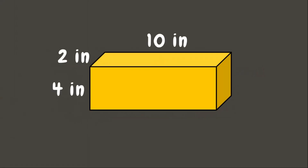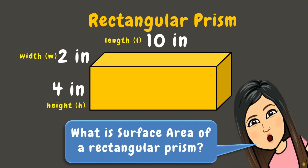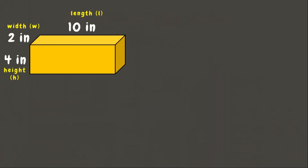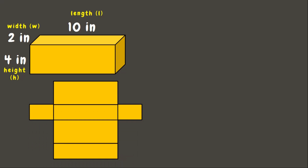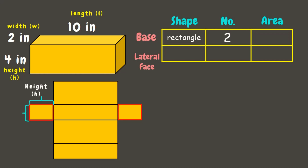Now let's have another example. We have here a rectangular prism whose height measures 4 inches, length 10 inches, and width measures 2 inches. What is the surface area of this rectangular prism? First, let us unfold our figure to get its net and identify the bases and the lateral faces. The bases of this figure are two rectangles, and to get the area of each we multiply the height and the width.